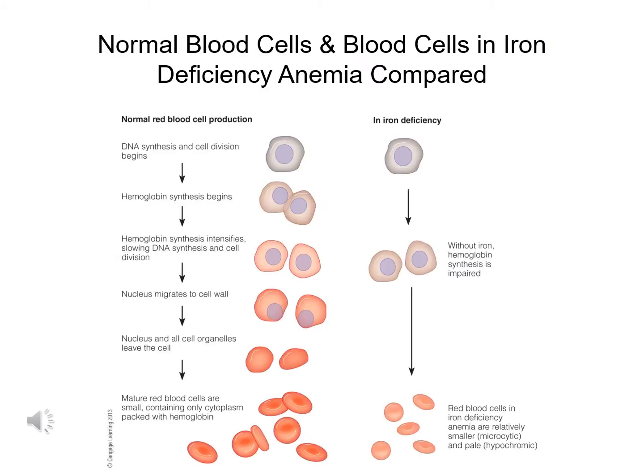A visual here shows how red blood cells deficient in iron compare to normal red blood cells. On the left is the development of a mature, healthy red blood cell. On the right, you can see how without iron, hemoglobin synthesis is affected, resulting in small, pale red blood cells that are unable to carry adequate amounts of oxygen.